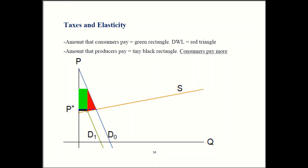Consumers pay this big green rectangle. Consumers do benefit from lower prices, but prices barely went down at all, so it's a very tiny benefit to consumers. As a result, they're paying almost the entire amount of the tax. The tax is the gap between old and new demand — this big height here. So consumers bear that burden; they get only a tiny price reduction, so they're stuck with the rest of the bill — effectively paying this much per unit instead of P star. You can see quite visually that they're paying way more than the producers are.